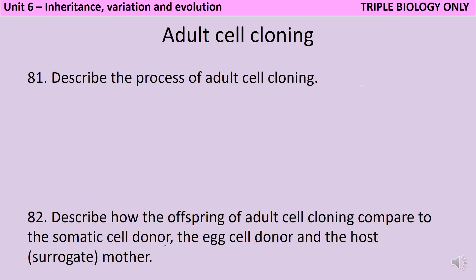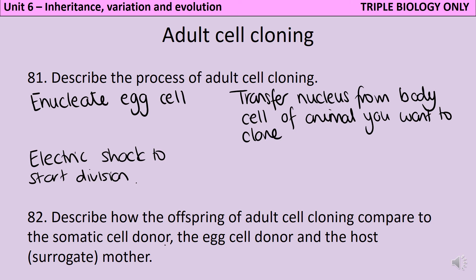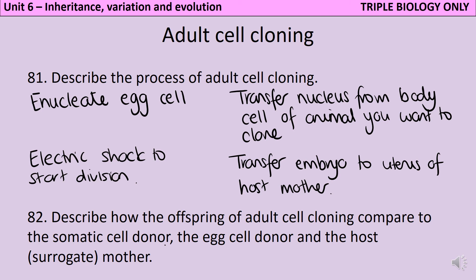Adult cell cloning is our typical Dolly the Sheep cloning. The first step is to take an egg cell and remove the nucleus from it - sometimes called enucleating the egg cell. Then you take a body cell, or somatic cell, from the organism you want to clone, remove its nucleus, and put it into the egg cell. An electric shock is used to start that cell dividing, and once it has produced an embryo, that embryo is transferred to the uterus of a host mother, who carries the pregnancy to term. The offspring will be genetically identical to the somatic cell donor, but won't share any DNA with the egg cell donor or the host mother.